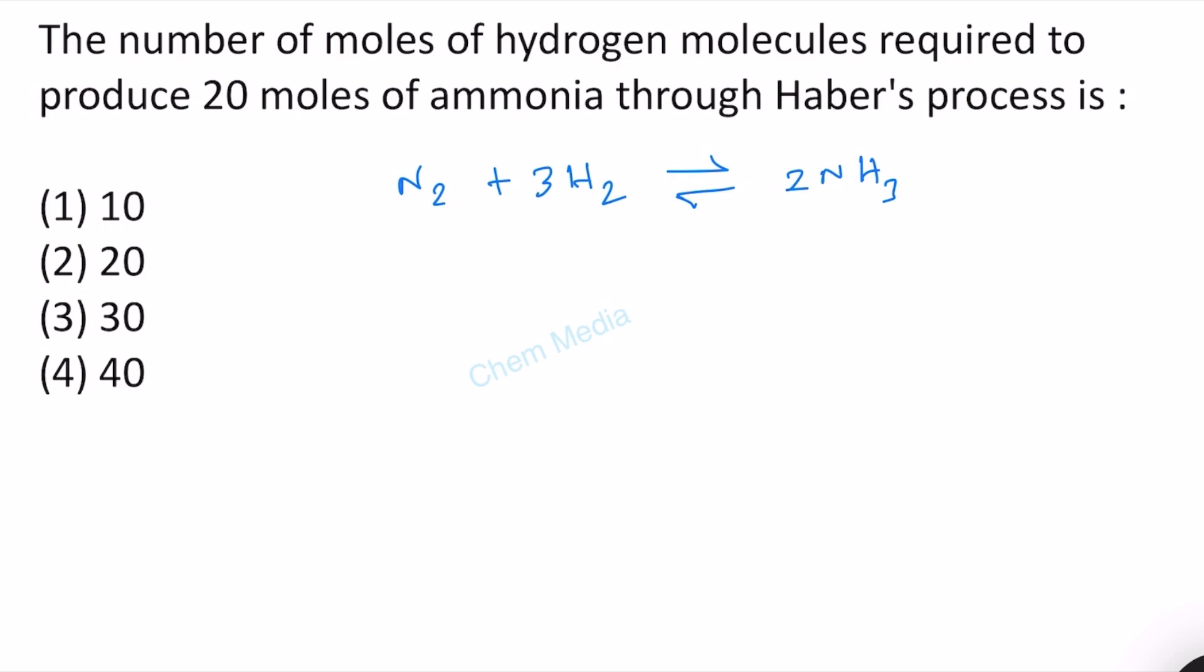The stoichiometric ratio here is one, three, and two. This means that to get two moles of ammonia, we need three by two moles of H2. And therefore, to get one mole of ammonia, we need three by two moles of H2.